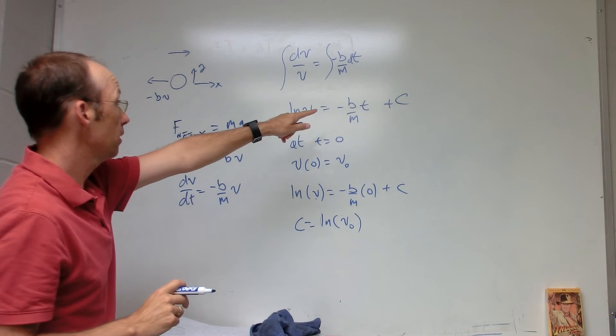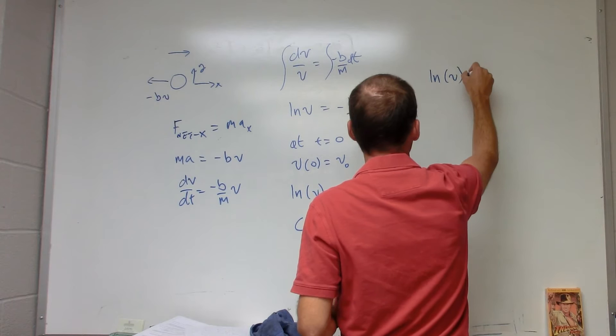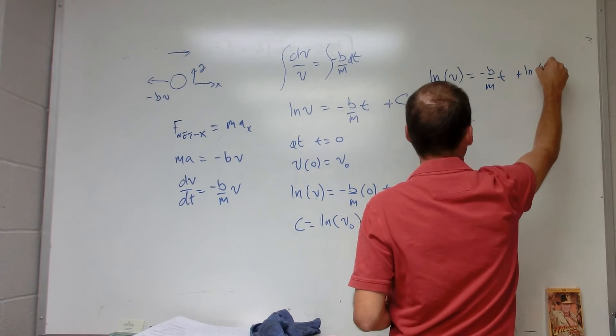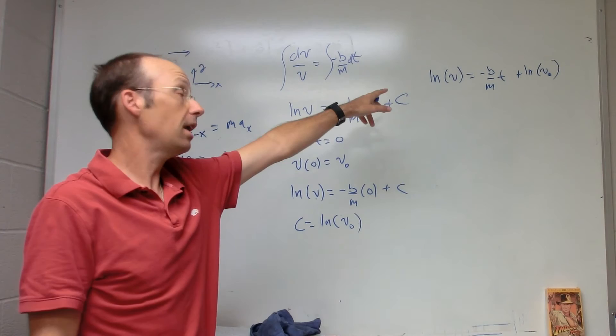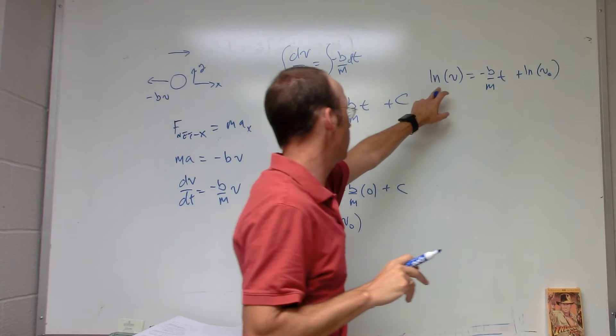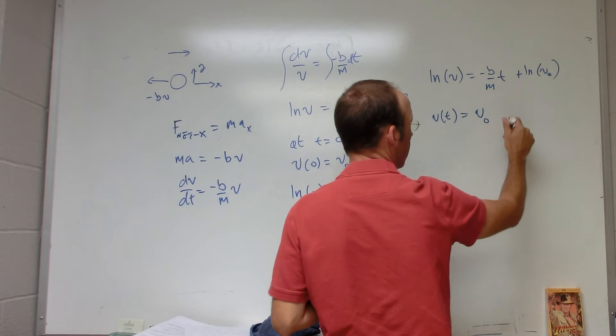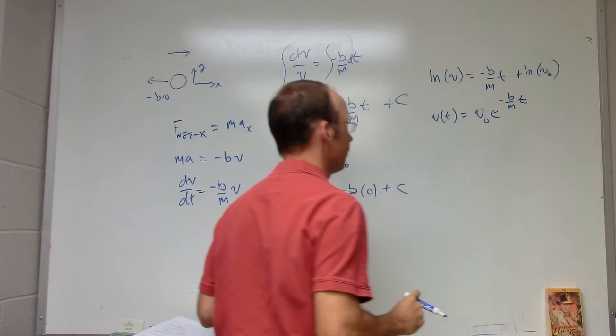Going back, I have ln(v) = -(b/m)·t + ln(v₀). Taking the exponential of both sides: e^(ln v) = v(t), and the right side, since it's a sum in the exponent, becomes v₀ · e^(-(b/m)·t). That's my expression for velocity as a function of time.